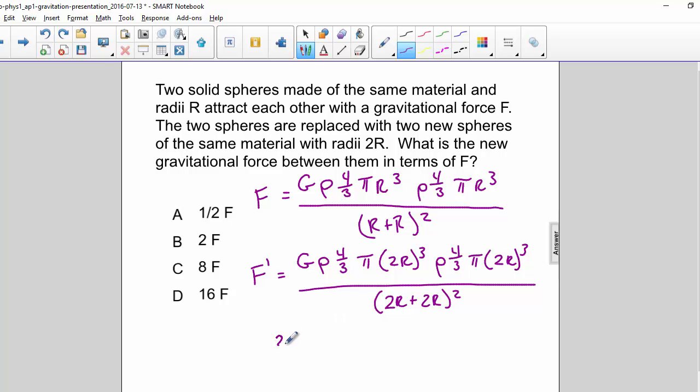Now we can factor out a 2 cubed right here and another 2 cubed from right here and in the denominator we can factor out a 2 squared. And what we have left is G rho 4 thirds pi R cubed rho 4 thirds pi R cubed divided by R plus R squared.